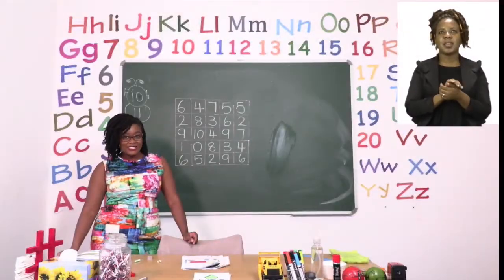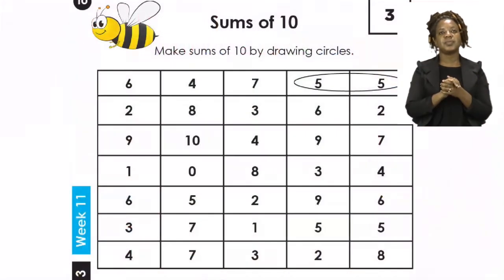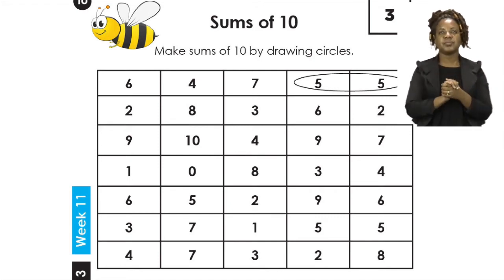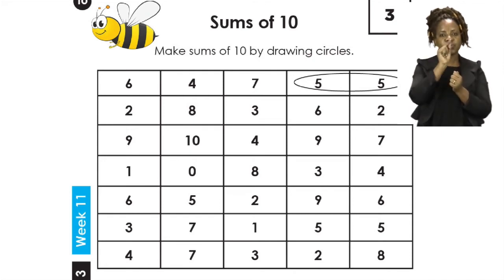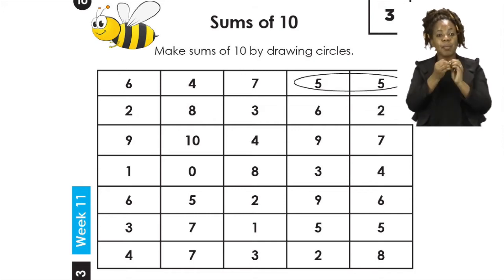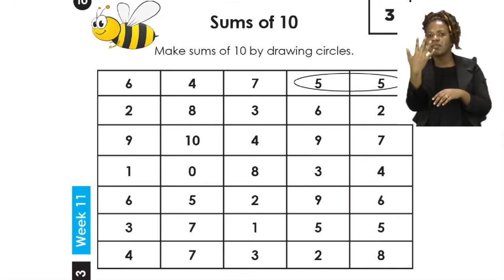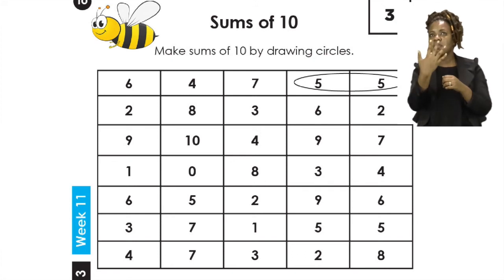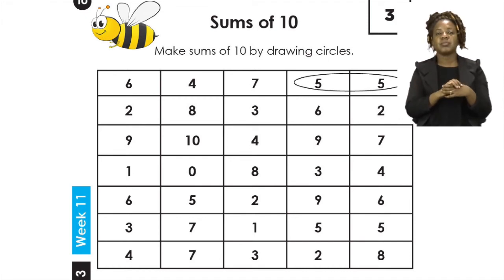For our next exercise, boys and girls, let's turn to page 10. On page 10, we are going to be doing sums of 10. This is when we make sums of 10 by drawing circles. When we say sums of 10, we mean that the two numbers we are going to use need to add up to 10. The example we have been given is five and five — five and five will give us 10. Now it is our job to make sure that we find the other ones.